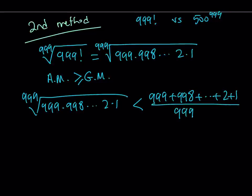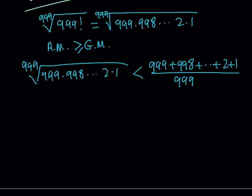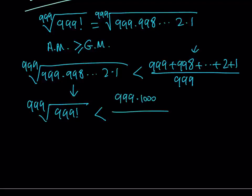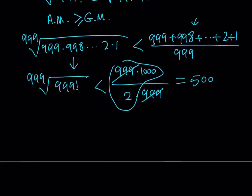Let me turn this into the 999th root of 999 factorial, which is less than... If you look at the top, it is n times n plus 1 divided by 2, so that sum can be expressed as 999 times a thousand divided by 2, and that 2 can be easily multiplied. So that's the sum I get from the top, and I'm dividing it by 999. 999 cancels out, and we're getting 500 here.